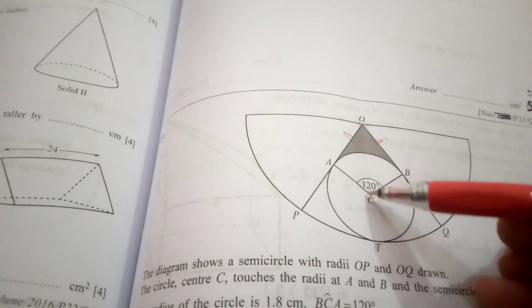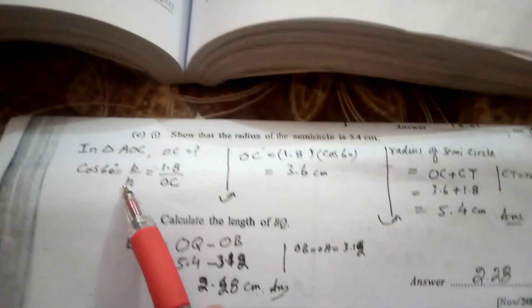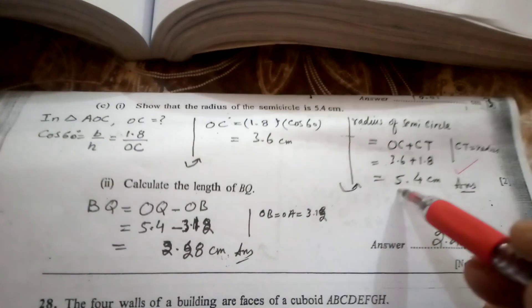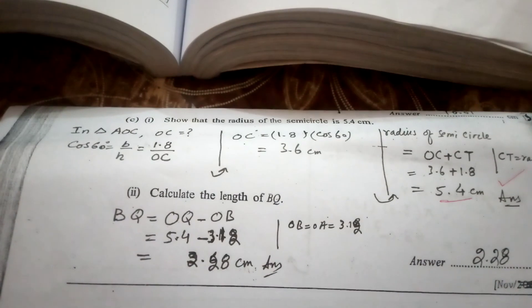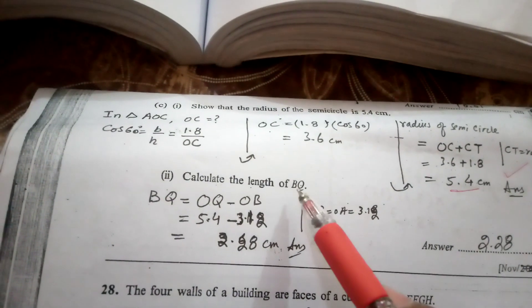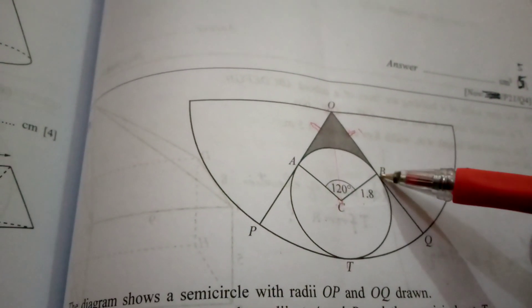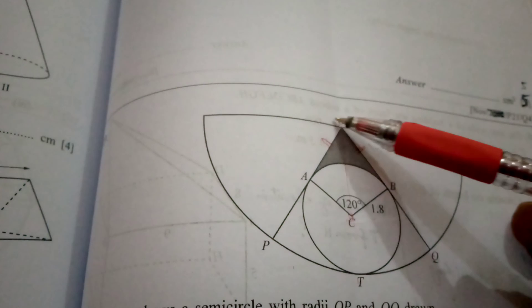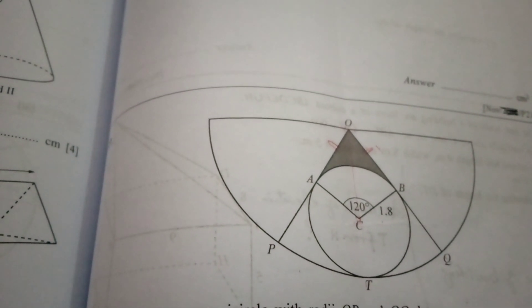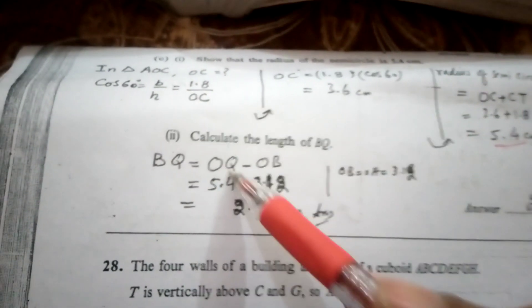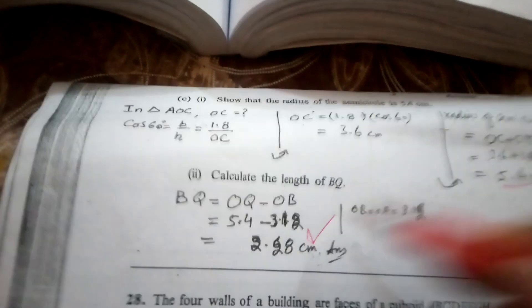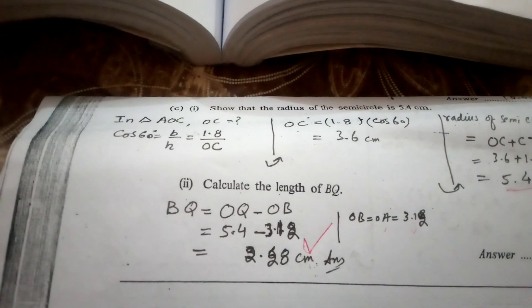Using the right-angle triangle we find the length OC, and adding CT gives a total radius of OC plus CT equal to 5.4 centimeters. Finally, to find the length BQ: BQ equals OQ minus OB. Since OQ is 5.4 centimeters and OB equals OA which is 3.12 centimeters, BQ equals 2.28 centimeters.